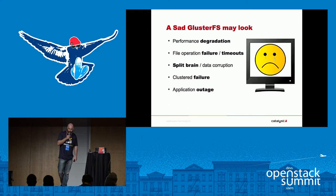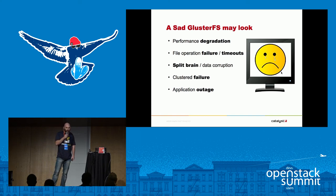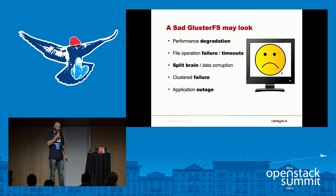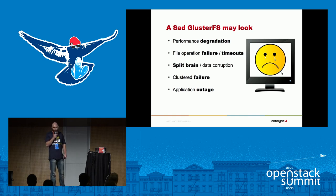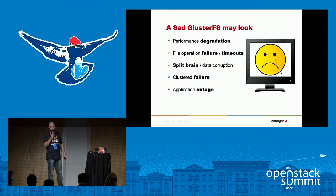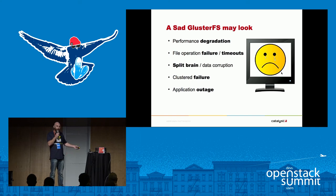What does a sad GlusterFS look like? I'm not saying don't use Gluster at all — I'm just passing on our stories of what it looks like when it's in an unhappy state. One case a few years ago was actually a kernel bug — there was something being cached that meant the network wasn't working between the machines, but this broke Gluster grandiosely and to us it looked like a failure of Gluster. We saw massive performance degradation, complete failure of the application to work, timeouts, file operation failures, split-brain scenarios, cluster failure meaning one part of the file system fails for one application and fails for all, and of course application outage.